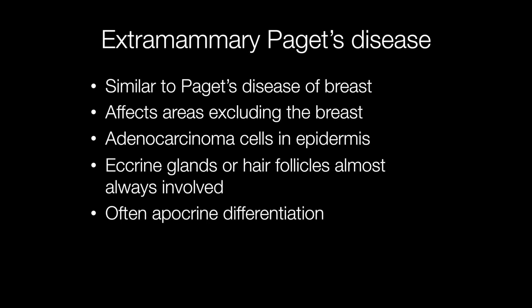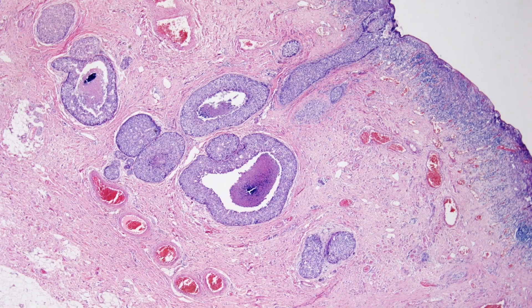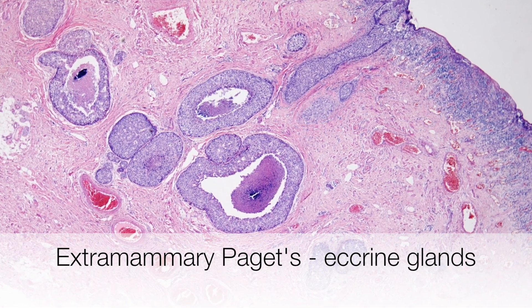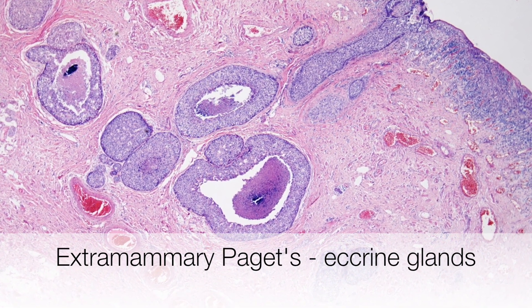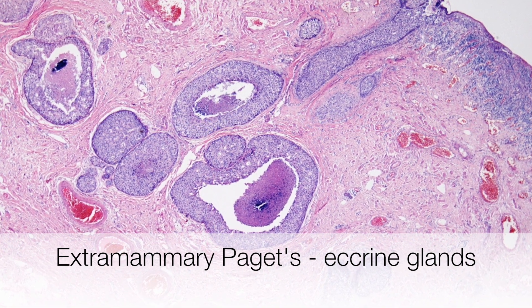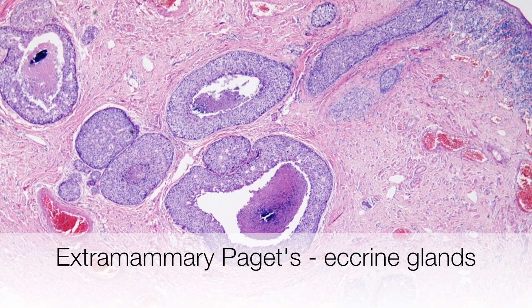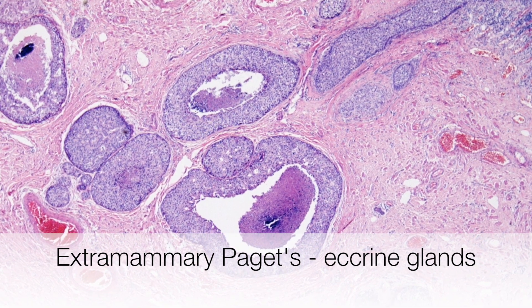As in Paget's disease of the breast, there are adenocarcinoma cells in the epidermis, but instead of the cells originating from the breast ducts, eccrine glands or hair follicles are almost always involved and there is often apocrine differentiation in extramammary Paget's. This is another example of Paget's disease of the vulva, and the disease can be seen to arise from the eccrine glands that are being distended by the malignant process.